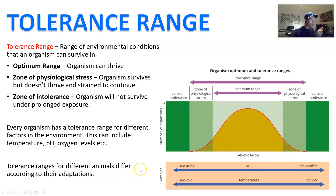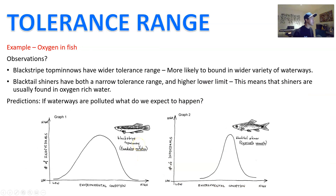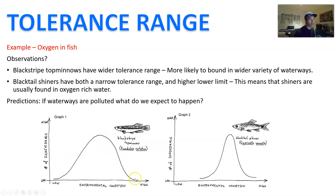The ranges of different animals are going to differ according to their adaptations. Here is an example of oxygen levels in fish. The black-striped minnows have a wider tolerance range, and the black-tailed shiner has both a narrow tolerance range and a higher lower limit, meaning that particular level of oxygen needs to be a higher percentage in the water and they also can't tolerate as much. So usually you're going to find the shiners in oxygen-rich water.